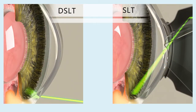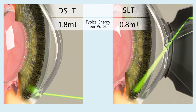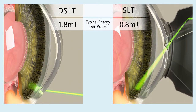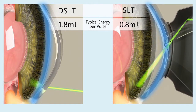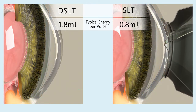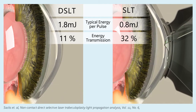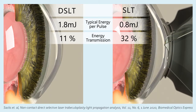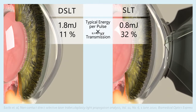The typical energy delivered per pulse is higher in DSLT than SLT. In DSLT, the energy is directed through the limbus, and in SLT via the cornea. DSLT allows energy to scatter throughout the tissue, resulting in lower energy transmission to the trabecular meshwork. Energy per pulse reaching the trabecular meshwork is similar in both therapies.